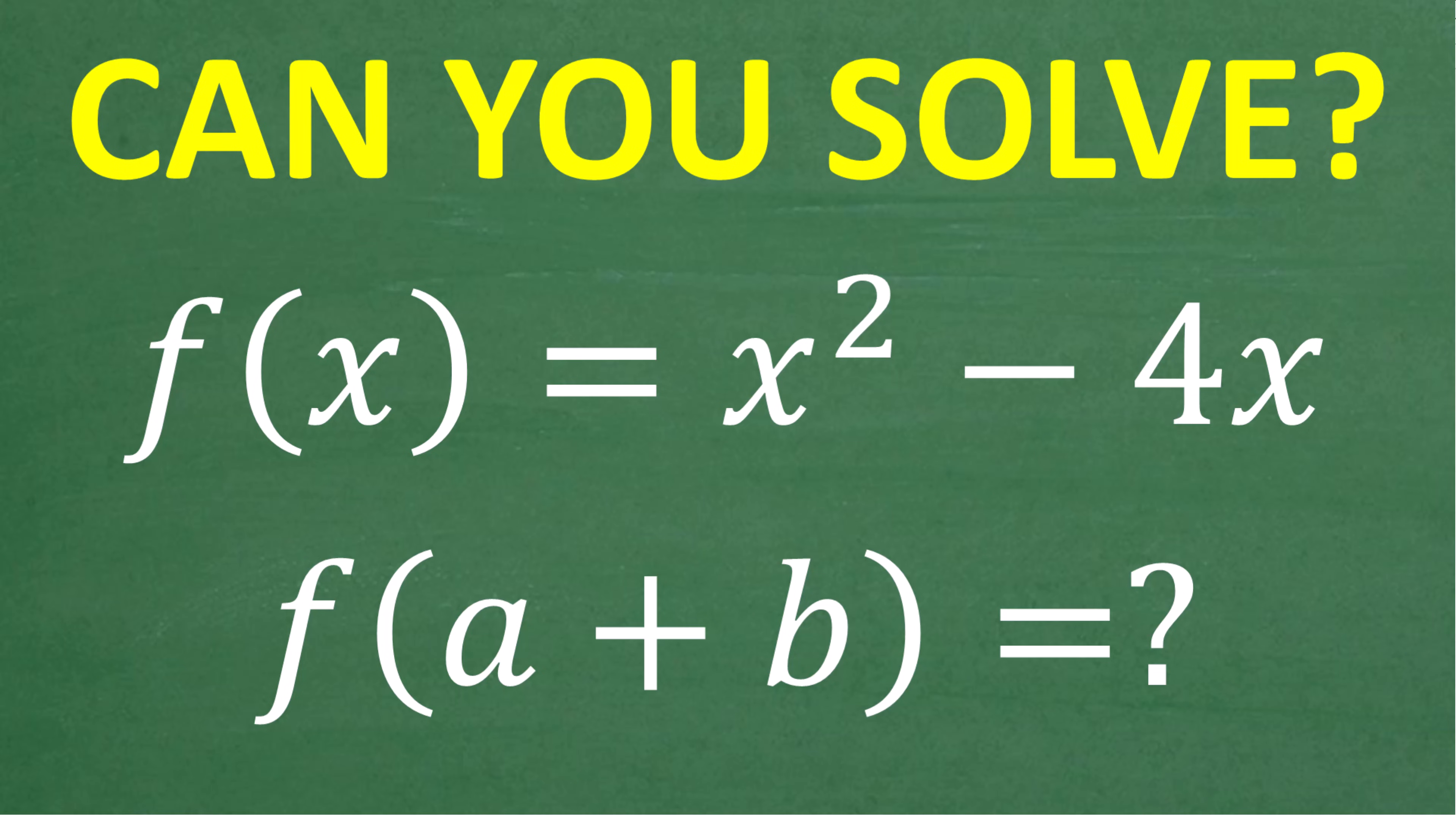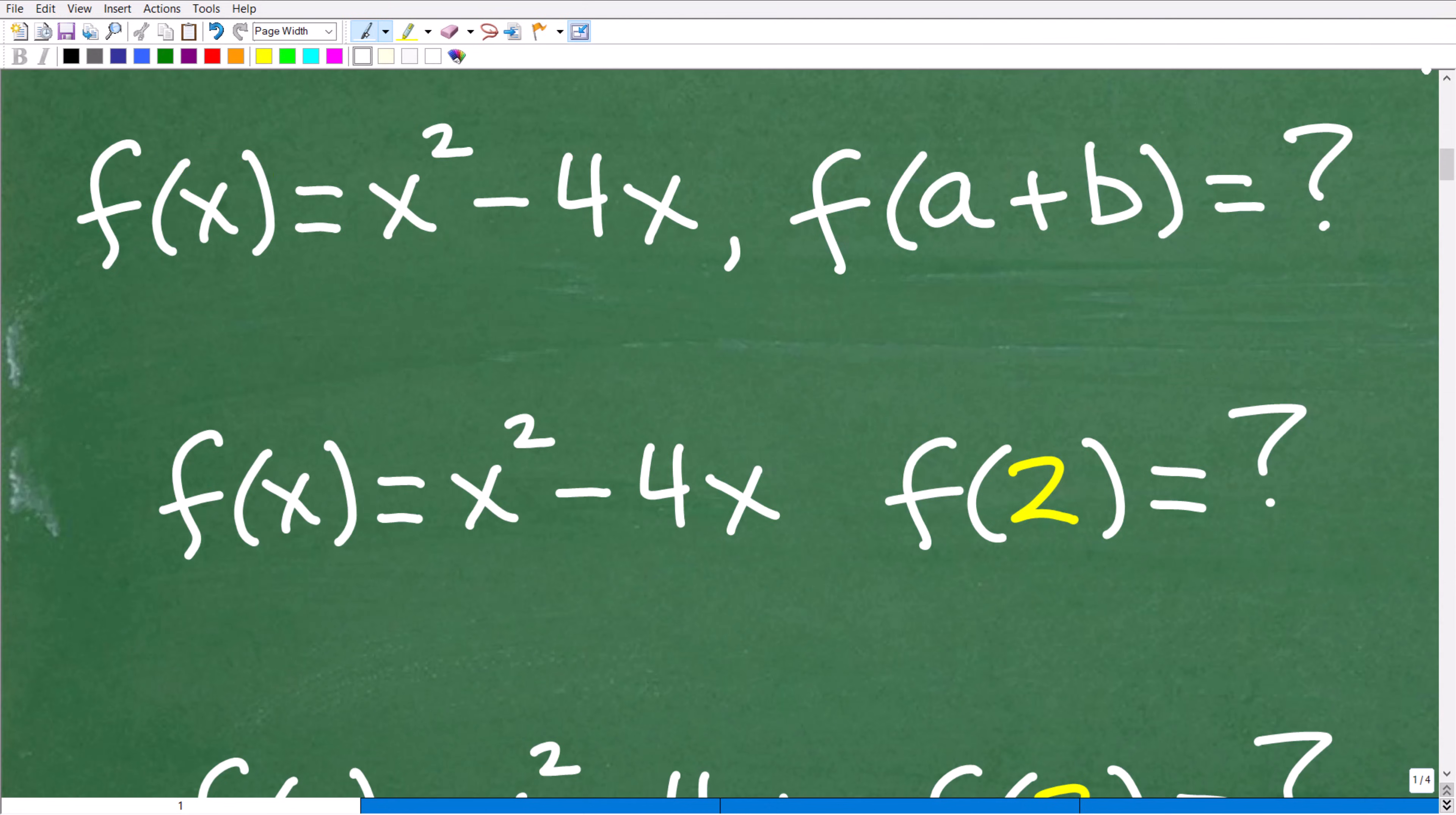But here is the problem. We have f(x) = x² - 4x and we want to evaluate this function for f(a+b). What is this equal to? Well, a lot of students simply won't know where to start. So let's get into the solution right now.